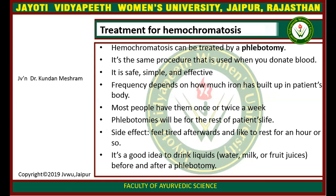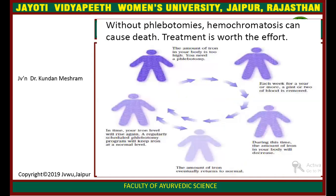Treatment of hemochromatosis: hemochromatosis can be treated by phlebotomy, the same procedure used when donating blood. It is safe, simple, and effective. Frequency depends on how much iron has built up in the patient's body. Most people undergo it once or twice a week. Phlebotomy will continue for the rest of the patient's life. Side effects include feeling tired afterwards and needing to rest for an hour or so. It is a good idea to drink liquids such as water, milk, or fruit juices before and after phlebotomy.